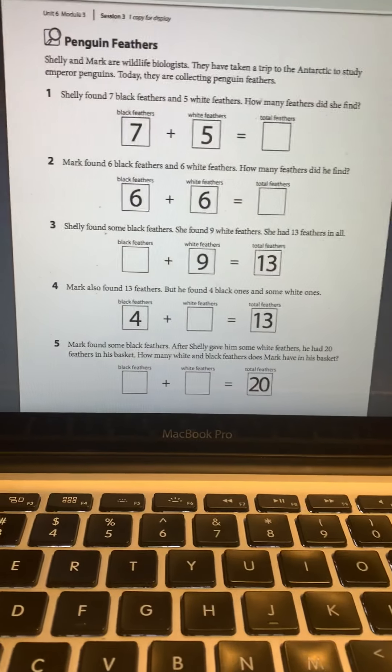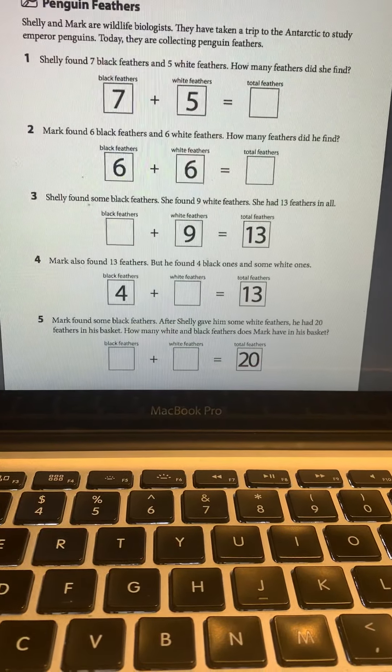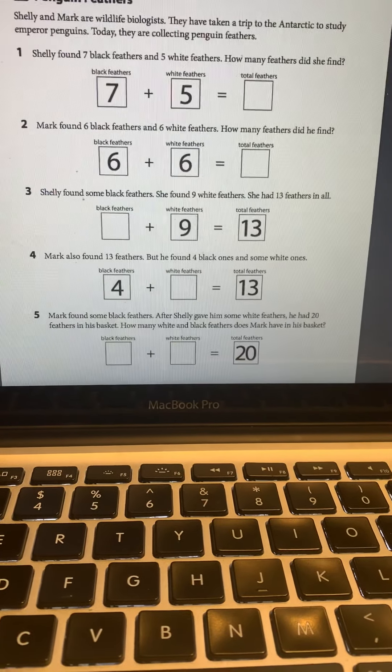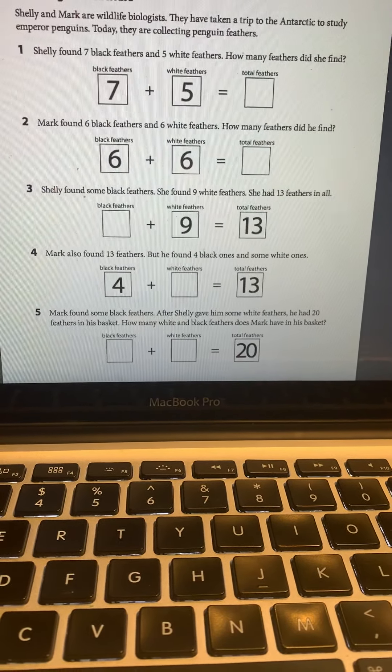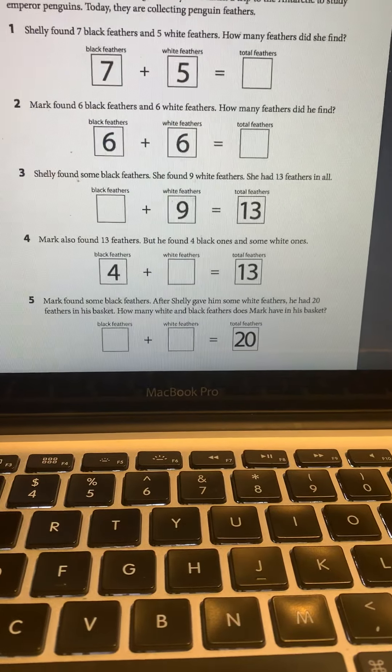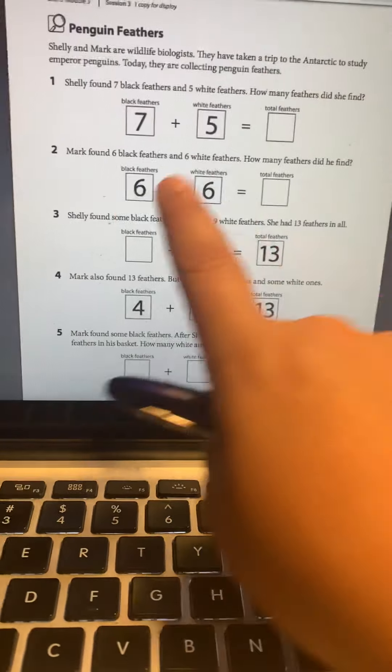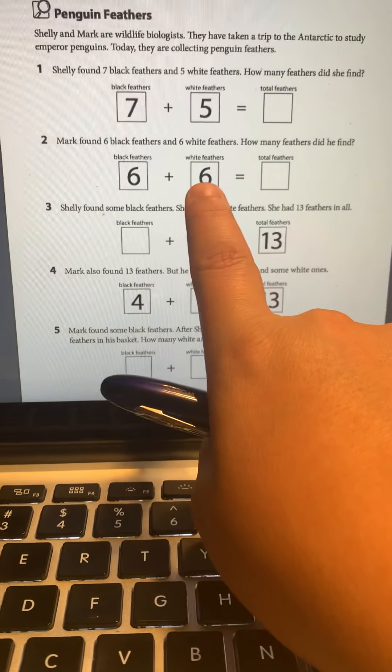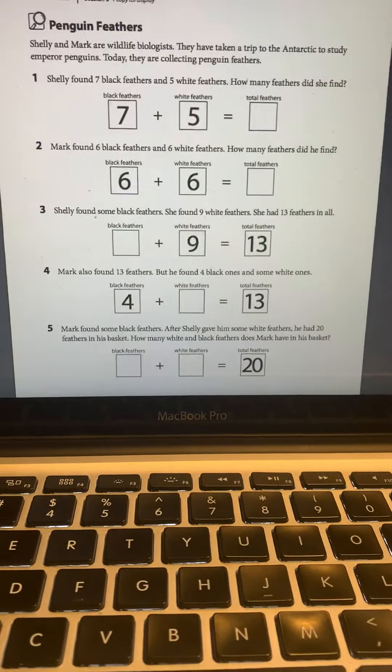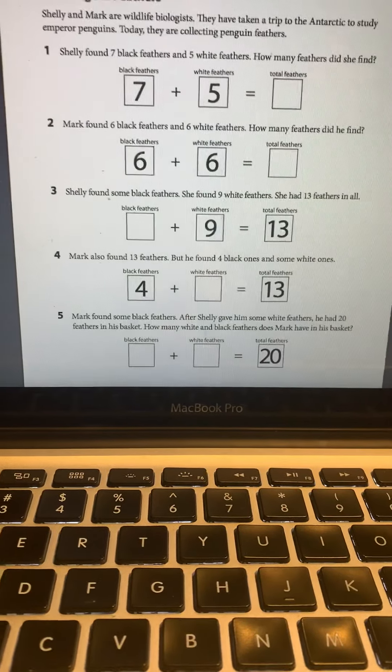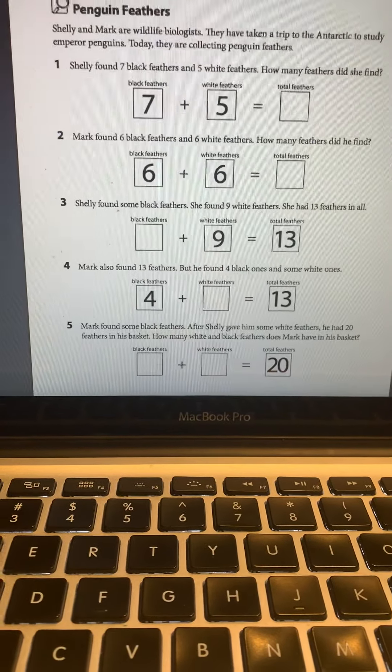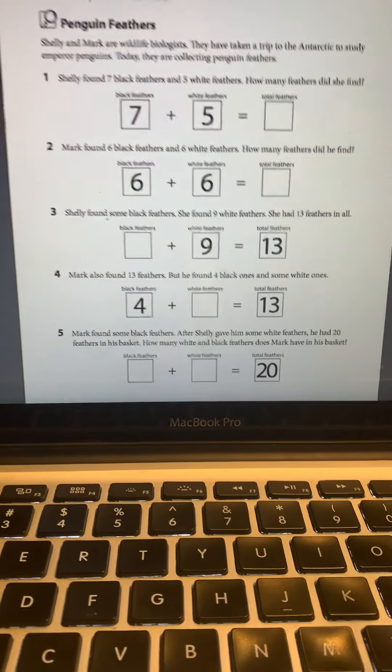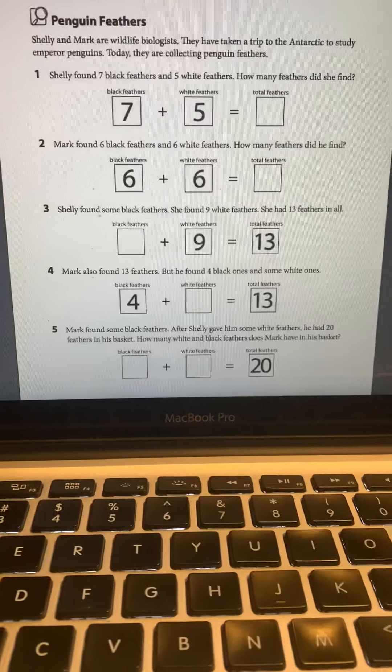Number two, Mark found six black feathers and six white feathers. How many feathers did he find? Let's do this one in our brain. Six plus six. I'm going to put the first number inside my brain, six, and I'm going to count on six more. Six, seven, eight, nine, 10, 11, 12. So six plus six is 12 total feathers.